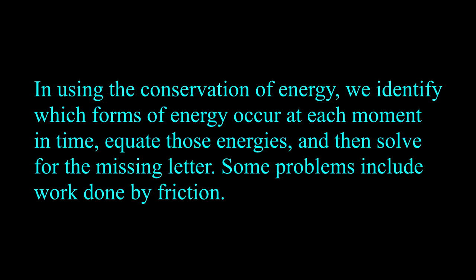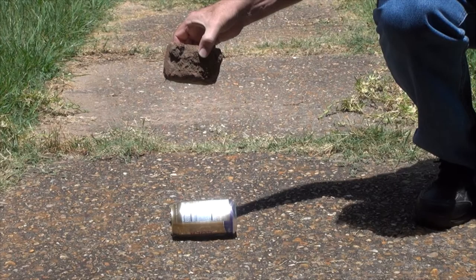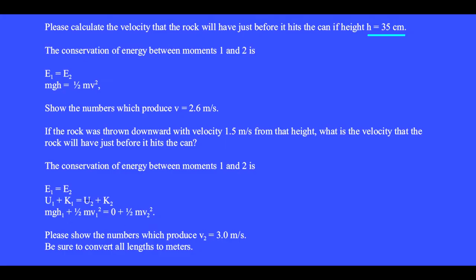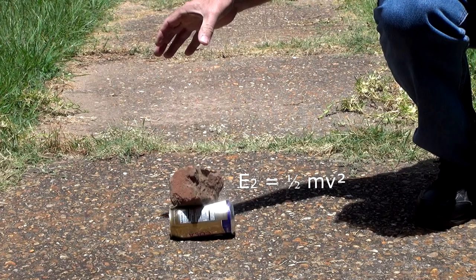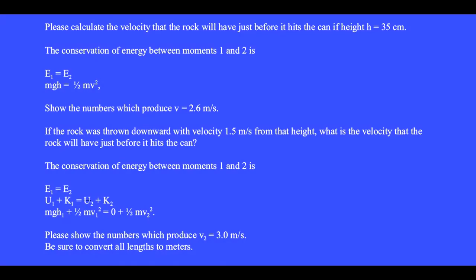Please calculate the velocity the rock will have just before it hits the can if height h equals 35 centimeters. We write the conservation of energy between moments 1 and 2: E1 equals E2. At moment 1, the mechanical energy is all stored gravitational potential energy, mgh. At moment 2, the rock is at h equals 0, so its total mechanical energy is all kinetic, ½mv². Show the numbers that produce v equals 2.6 meters per second.